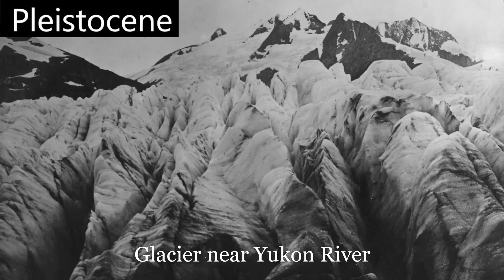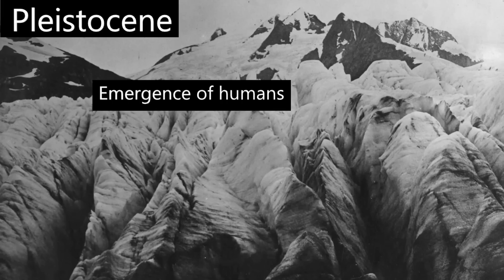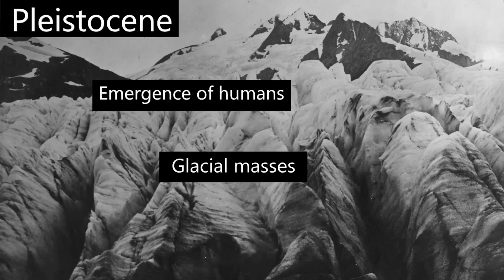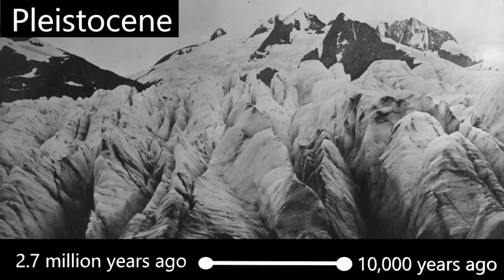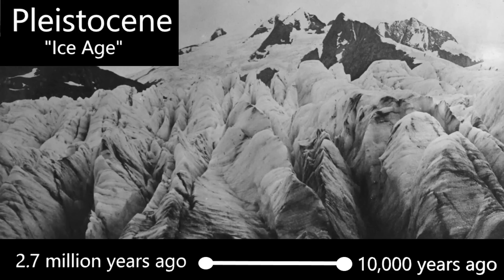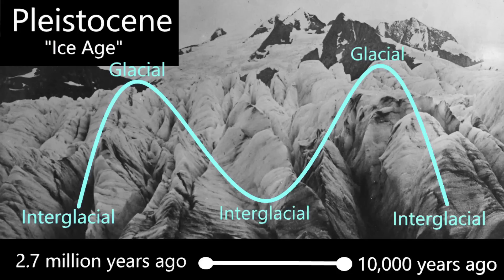Pleistocene is another term that requires explanation. The Pleistocene is the geologic epoch in which prehistoric humans emerged. It is hallmarked by the presence of large ice masses that began about 2.7 million years ago and continued until about 10,000 years ago. We used to call the Pleistocene the Ice Age, but now we realize that the last 2.7 million years are a series of high glacial periods and interglacial periods. We are living in an interglacial period now.